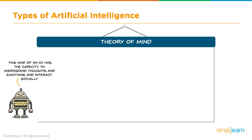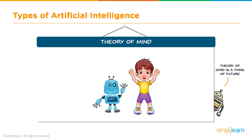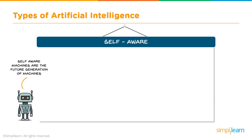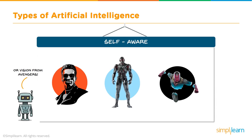Theory of mind AI has the capacity to understand thoughts, emotions, and interact socially — a machine based on this type is yet to be built. Theory of mind is the thing of the future; the industry is poking at it, but most guesses about how you feel are still based on previous data. Theory of mind would take it one step further in understanding the emotions behind it. Finally, self-aware machines are future-generation — super intelligent, sentient, and conscious, like the Terminator, Ultron, or Vision from Avengers. For right now, these are mostly movie characters, but we are getting closer to seeing them in the real world.